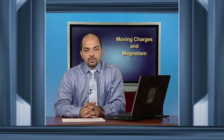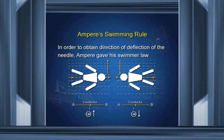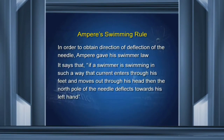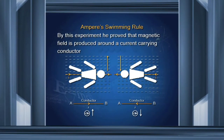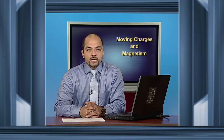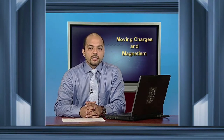Ampere's swimming rule. This rule helps us in calculating the direction of deflection in the needle. It says that if a swimmer is swimming in such a way that current enters through his feet and moves out through his head, then the north pole of the needle deflects towards his left hand. By this experiment, he proved that magnetic field is produced around a current-carrying conductor. So the new definition of magnetic field becomes: the space around any magnet or moving charges in which other magnetic substance or moving charge is deflected.